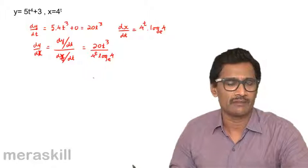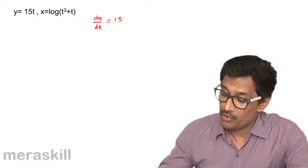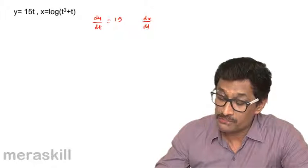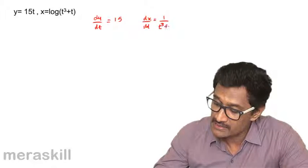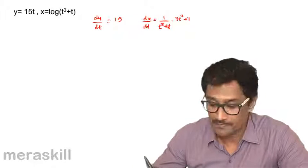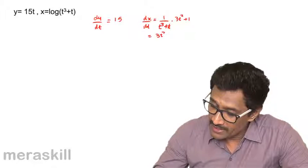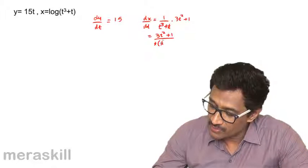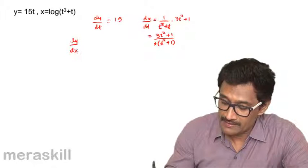Let's take more examples. You have y equals 15t, so dy by dt is 15. Now dx by dt - let's brush up our chain rule concept. Log of t cube plus t is 1 upon t cube plus t, then d by dt of t cube plus t, which is 3t square plus 1. So this will eventually be 3t square plus 1 upon t times t square plus 1.